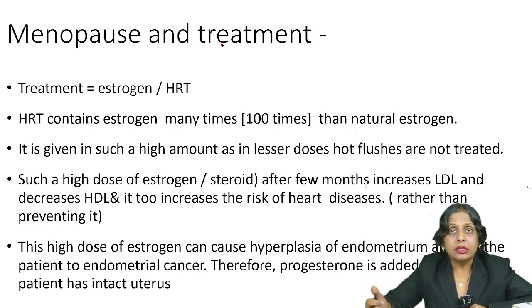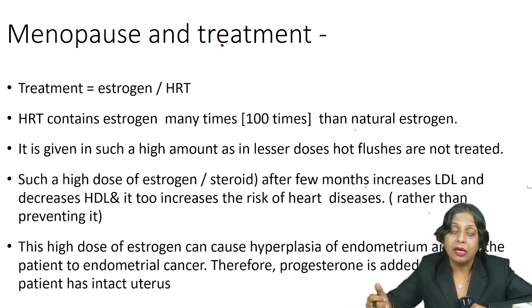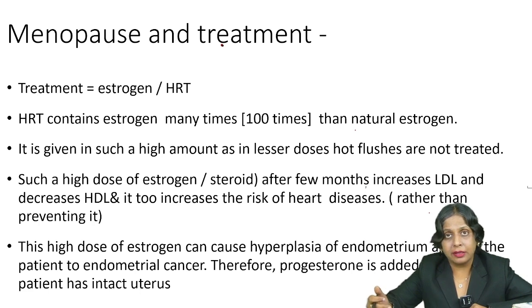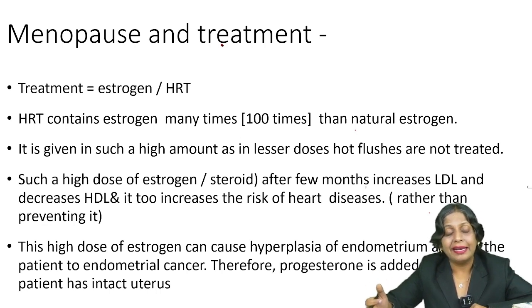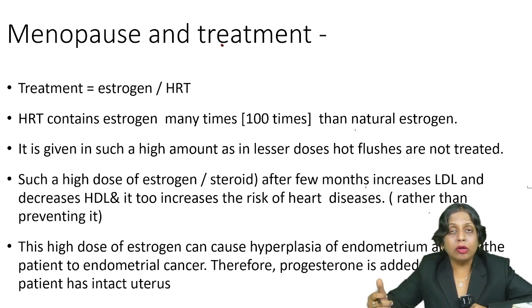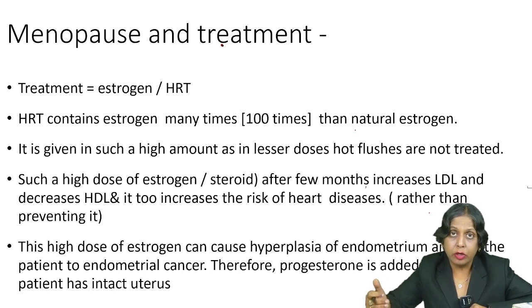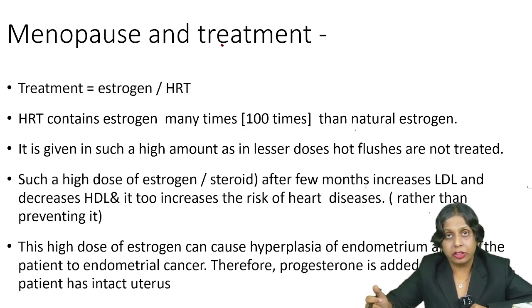Such a high dose will of course have a lot of side effects. The main side effect is that it risks the patient for cardiac diseases. Since estrogen is basically a steroid, giving such a high dose will increase LDL and decrease HDL, thus risking the patient for cardiac diseases. The second side effect is that such a high dose of estrogen will cause endometrial hyperplasia. To decrease this side effect, we add progesterone, which stops endometrial proliferation — but we only add progesterone if the patient has an intact uterus.